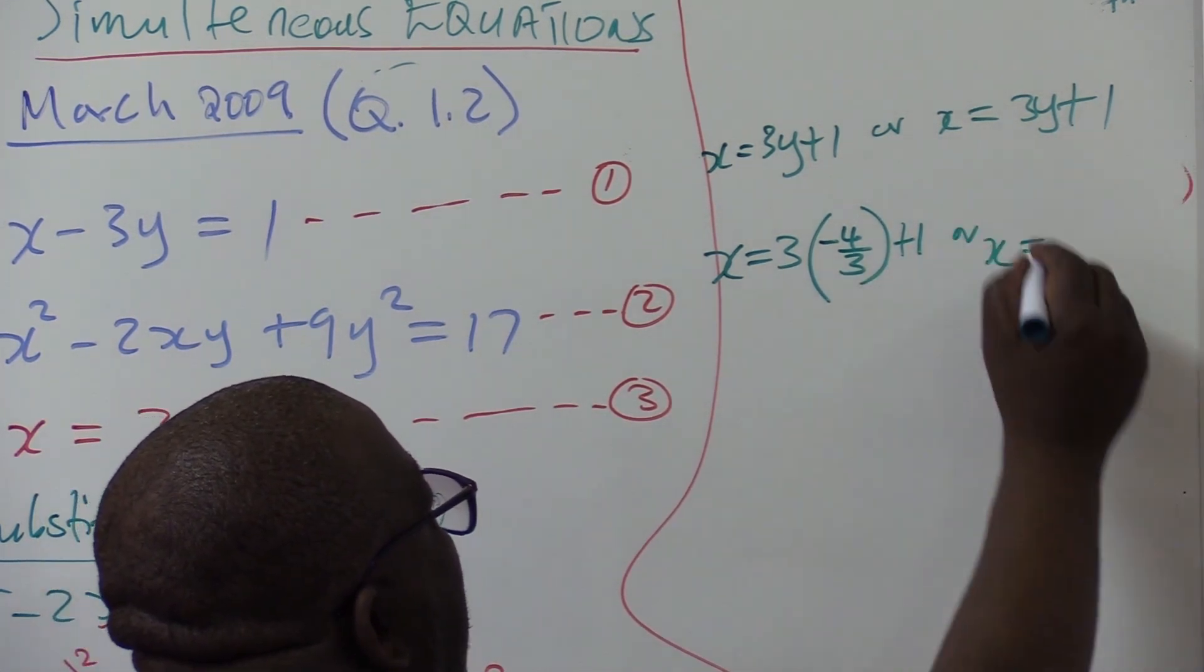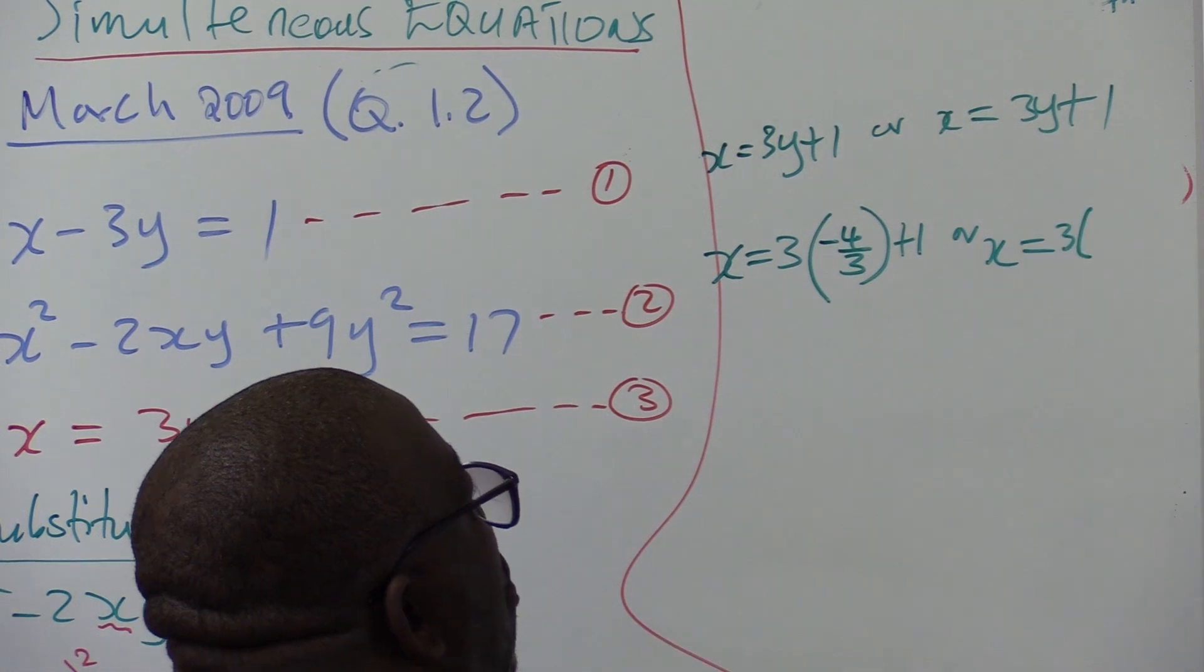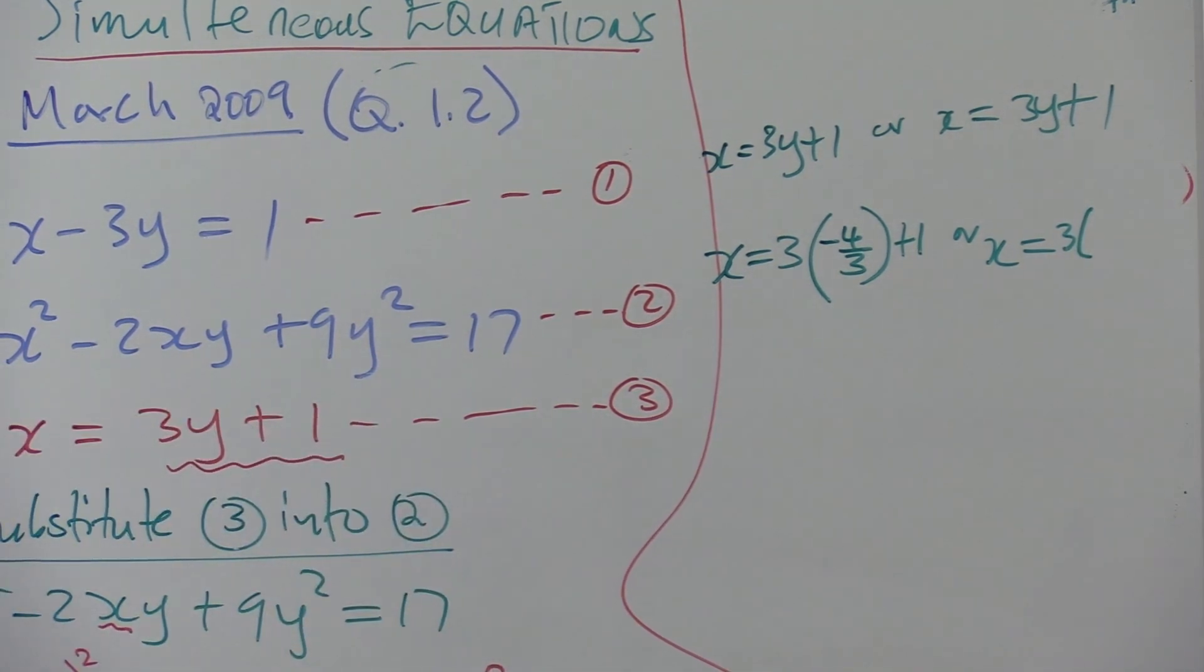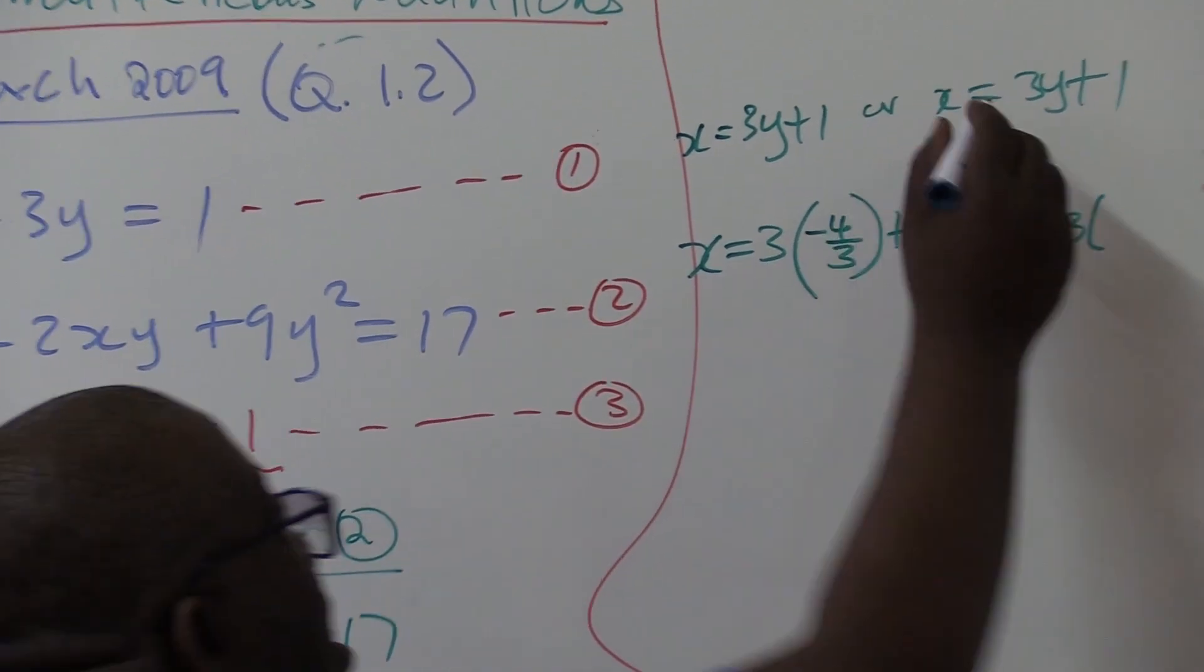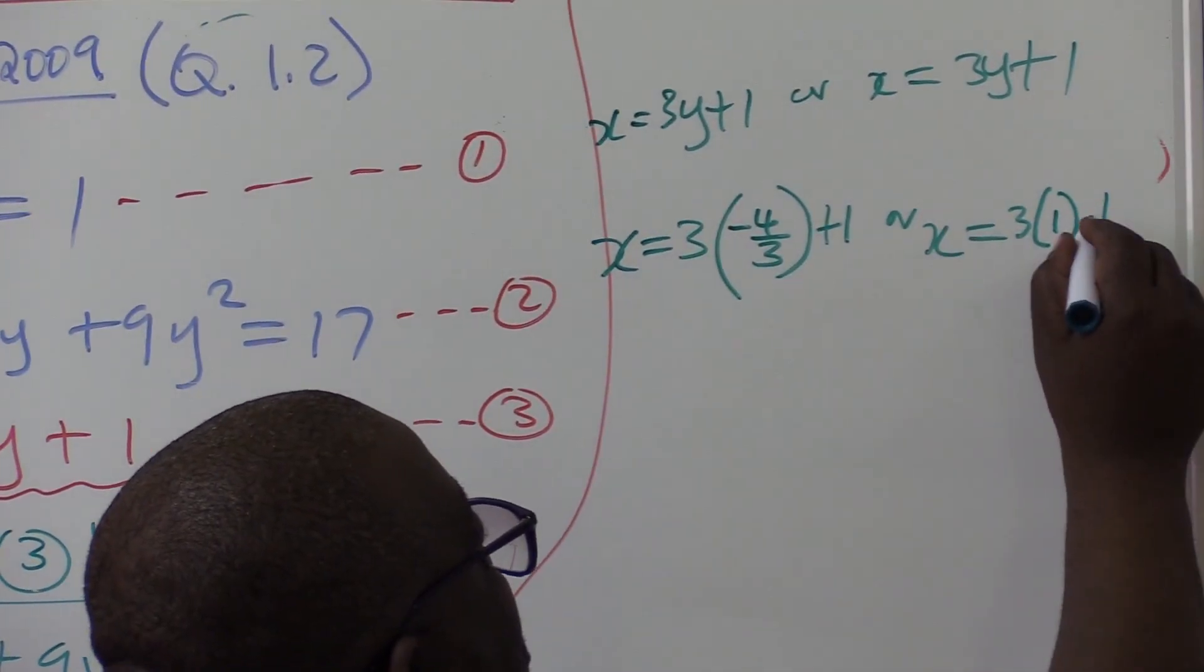Or, x equals 3 times the next value of y, which is 1. You substitute it: 3 times 1, plus 1.